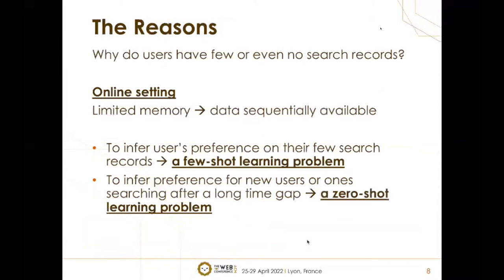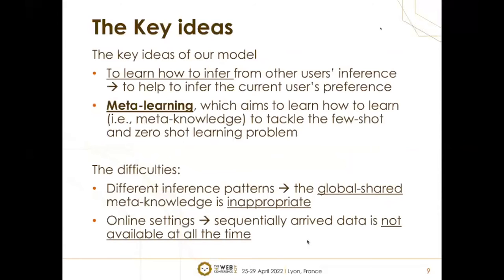Why do users have few or even no search records in the real world? In practice, because of limited memory, many practical programs focus on the online setting, where data arrives and is available sequentially. If the user has few available search records, inferring the preference becomes a few-shot learning problem. Moreover, if the user is new or interacts with the search engine after a long time gap, the inference becomes a zero-shot learning problem. To tackle this problem, the key idea of our method is to learn how to infer from other users' inference, and then help infer the current user's preference — which is also the key idea of meta-learning, which aims to learn how to learn, and then use this meta-knowledge to tackle few-shot and zero-shot learning problems.